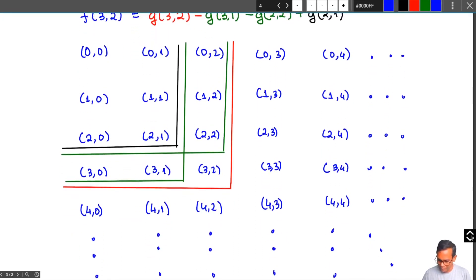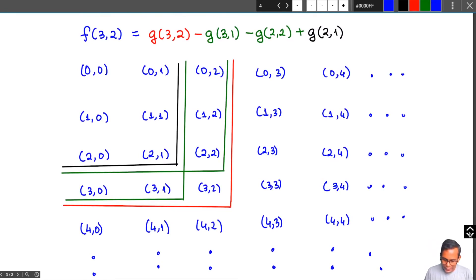It's an infinite array, and g(3, 2) is the sum of the values assigned to all the f values which appear inside this quadrant delineated by red lines. Now from that if I subtract g(3, 1) I'm removing everything except what's in the last column of this red quadrant. And if I remove g(2, 2) I'm removing everything except what's in the last row of this red quadrant.